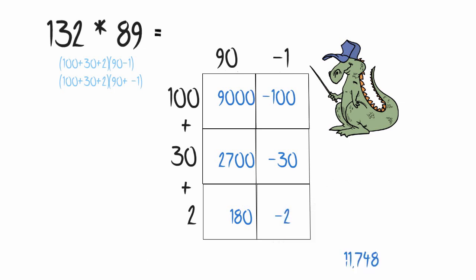This time, I'm going to add up all my positive numbers, which would give me 11,880. And all my negative numbers, which would give me negative 132. When I combine those, I get a total of 11,748.